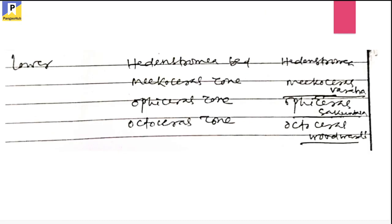This is the general stratigraphic succession of the Triassic of Spiti. In the lower part of the Triassic of Spiti, there are mainly four zones which are very important — you will get questions from these four zones in your exams and GATE. Those four zones are: Otoceras zone, Ophiceras zone, Meekoceras zone, and Hedenstroemia zone. The characteristic fossils in these four zones are named Otoceras woodwardi, Ophiceras sakuntala, Meekoceras baraha, and Hedenstroemia. These four typical fossils you have to remember — they are very important from an exam point of view.